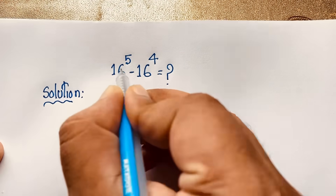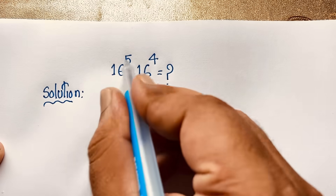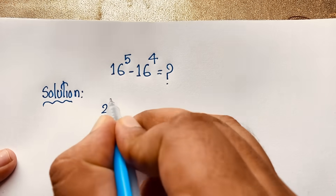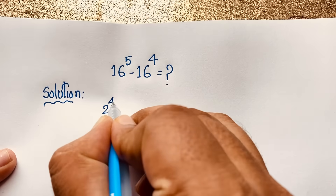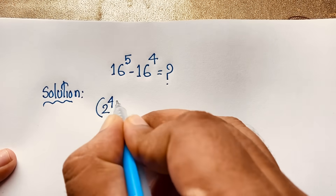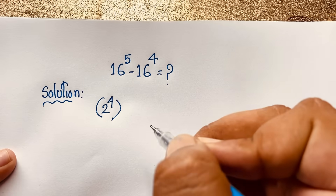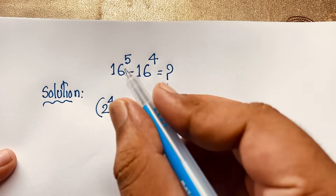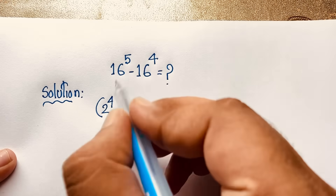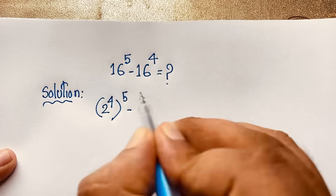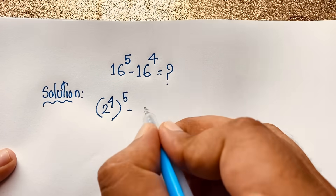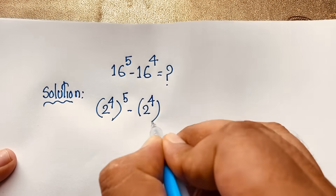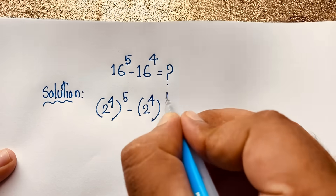First of all, 16 to the power 5 — here 16 can be written as 2 to the power 4, because 2 times 2 times 2 times 2 equals 16. So we have 2 to the power 4, raised to the power 5, minus 2 to the power 4, raised to the power 4.